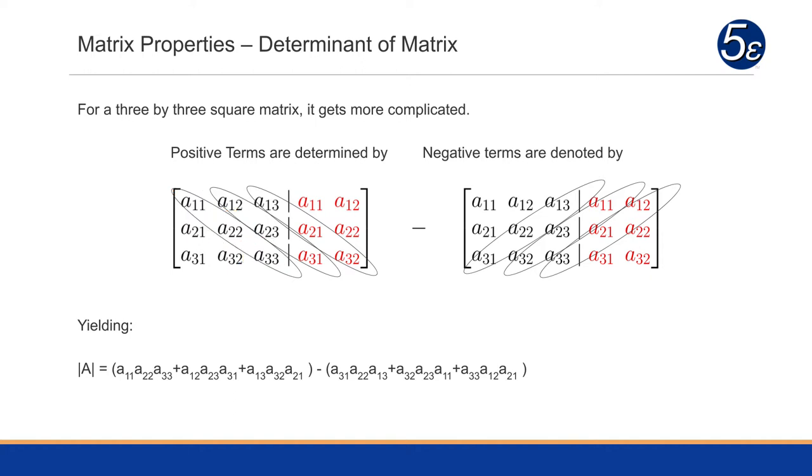Then we will multiply a₁₃ times a₂₁ times a₃₂. And from that, we will subtract, and again, using the same extended matrix that we created, we will subtract the diagonals going in the opposite direction.